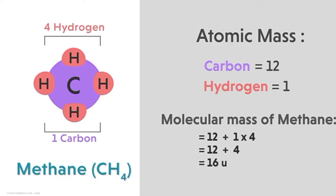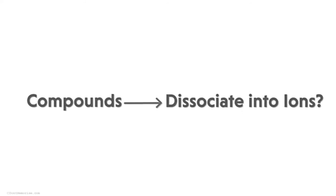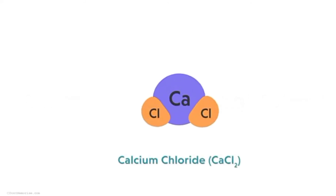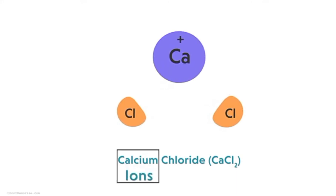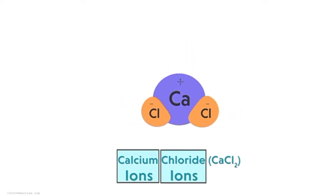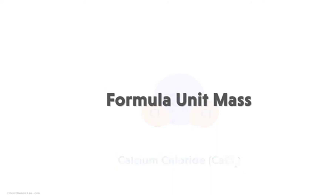We have talked about molecules that do not dissociate into ions. But what about compounds that dissociate into ions? Take the example of calcium chloride — it dissociates into calcium and chloride ions. In this case, we will use formula unit mass.